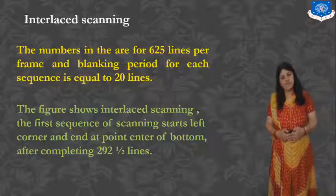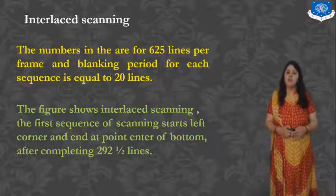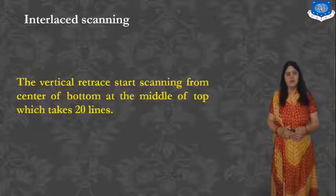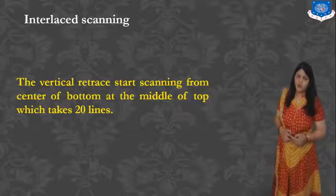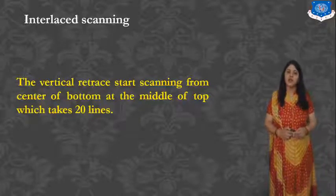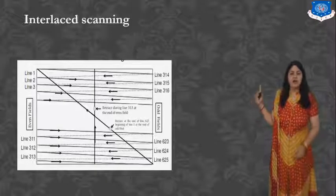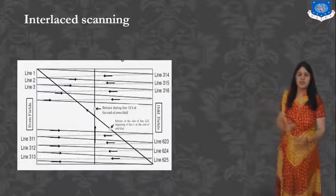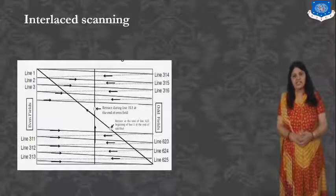In Interlaced Scanning, the first sequence starts from the left corner and ends at the center of the bottom after completing 312.5 lines. The vertical retrace then starts scanning from the center of the bottom to the middle of the top, taking 20 lines. In television, the total lines per frame are 625. Here you can see the interlaced scanning diagram.